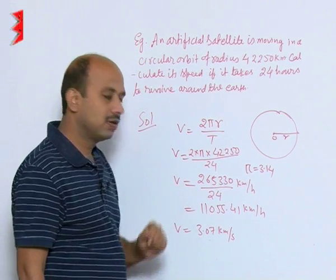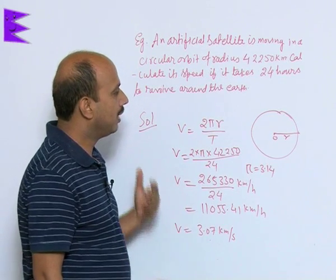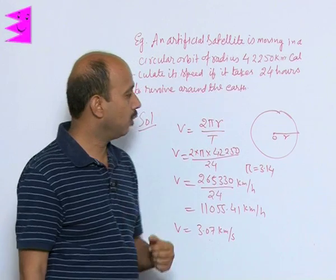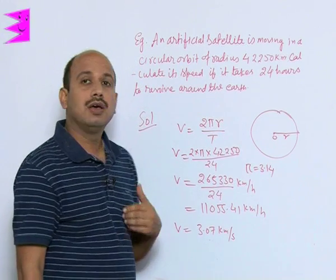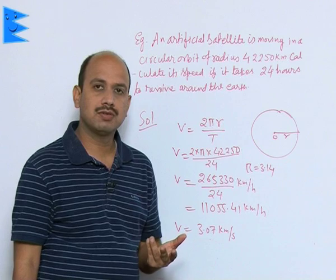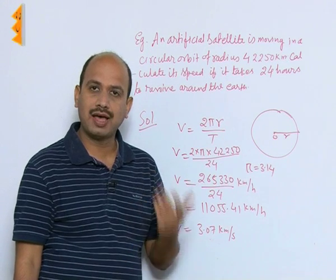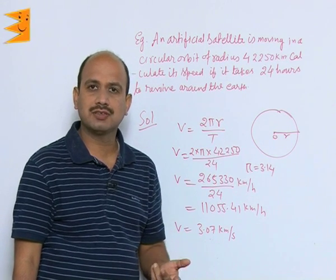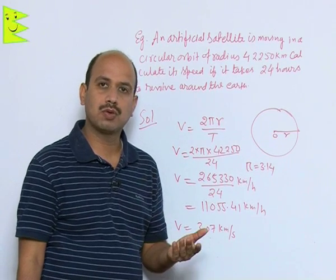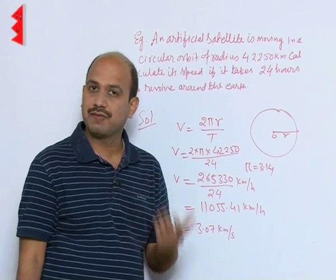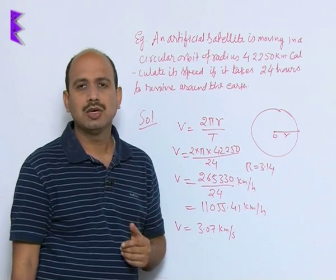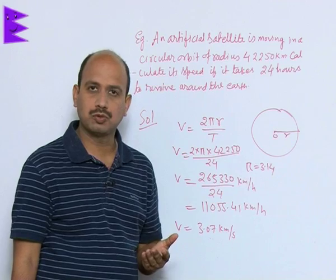So this is an example of circular motion where we applied the formula V = 2πr / T. There are many other examples of circular motion — like the hands of a clock: the minute hand, second hand, and hour hand all perform circular motion. Also, the blades of a fan move in circular paths.